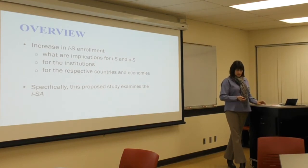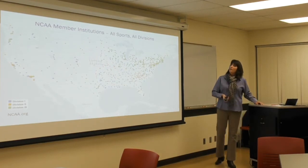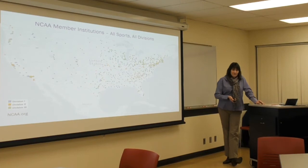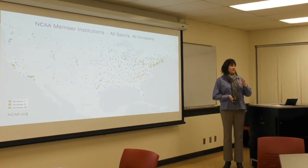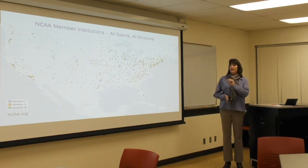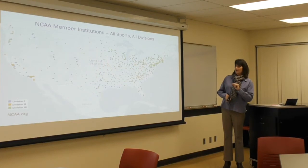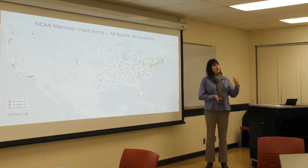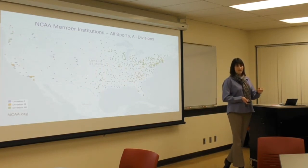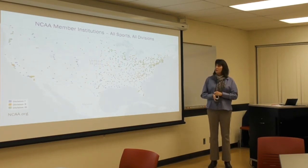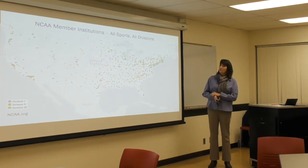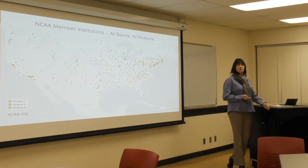What I am going to talk about is specifically international student-athletes. This is a map of the United States showing NCAA member institutions. The orange — actually the green spots are Division III athletic programs, smaller and less competitive. Division II is a little more competitive and more business-like. Division I represents the most business-like models. Of the international students I plan to investigate, they could be looking at this map and choosing any of those spots. There's a lot of opportunity for international student-athletes who choose to study in the U.S.